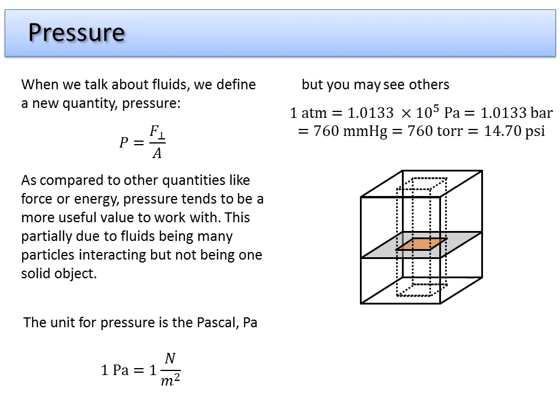1.0133 - you'll notice that these have the same number except for this factor of 10 to the fifth difference. One of my more favorite ones to use is millimeters of mercury. It's a classical one because of how we measure pressure using old-school mercury barometers. I prefer torr. It's just a unit that I use quite a bit and if you ever work on a car PSI is going to be one. This is pounds per square inch. So there's a bunch of different ones and you have to be careful when you're doing problems to make sure that you are using the correct unit.